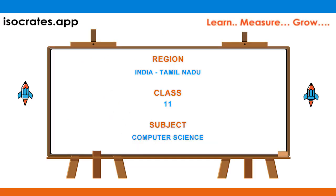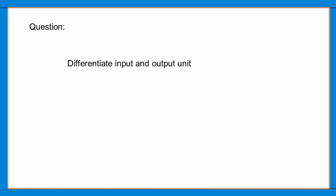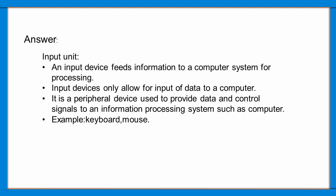Welcome to isocrats.app channel, a platform where you learn, measure and grow. In this video, we will show a quick and simple way to solve the question: differentiate input and output unit. An input device is a piece of equipment used to provide data and control signals to an information processing system such as a computer or information application.